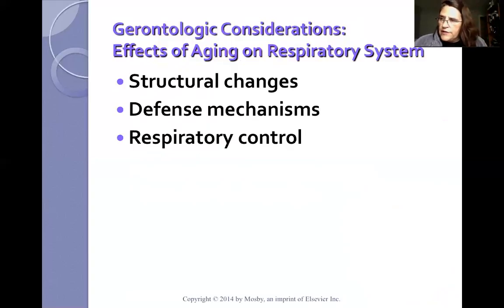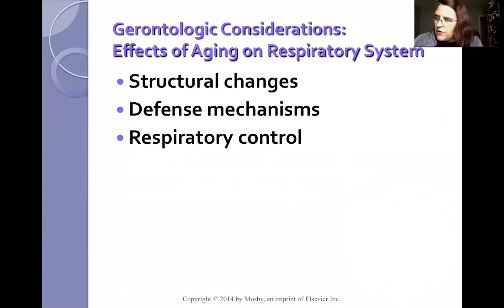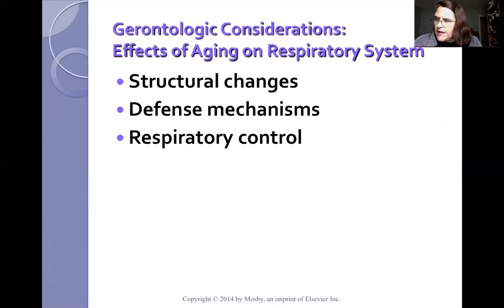Gerontological considerations — defined here as age 50 and above. We see structural changes including less chest expansion, barrel-shaped chest especially in people who have smoked for years, and reduced muscle strength. After age 50, lungs are harder to inflate and patients may require use of ancillary muscles. There is a decrease in the number of functional alveoli and less elasticity. Respiratory defense mechanisms are less effective due to decreased immunity, and with a less forceful cough, elderly are predisposed to respiratory infections.